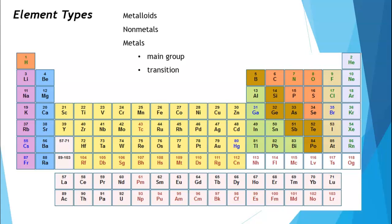In this video, we are going to discuss how to classify chemical compounds. To start off, we need to review how to determine what type of element you have using the periodic table. There are three main types of elements: metalloids, non-metals, and metals. Metals are further split into main group metals and transition metals.